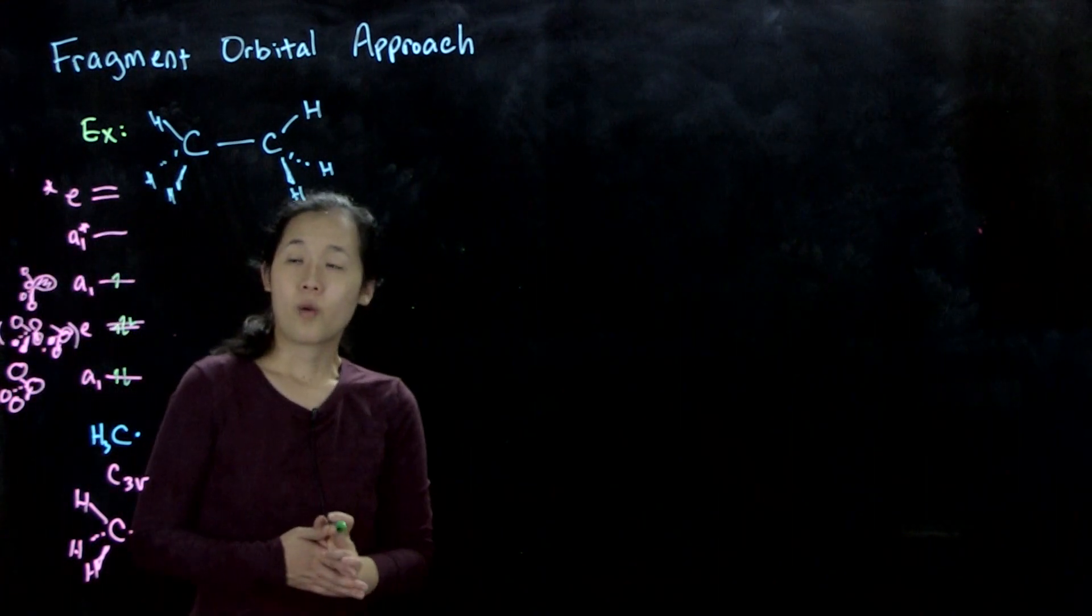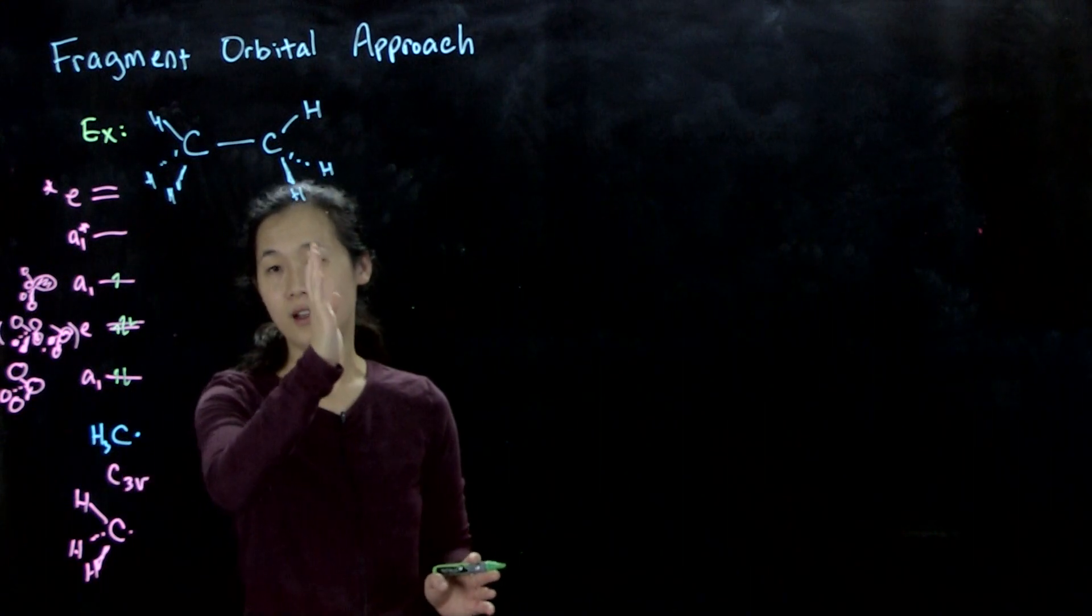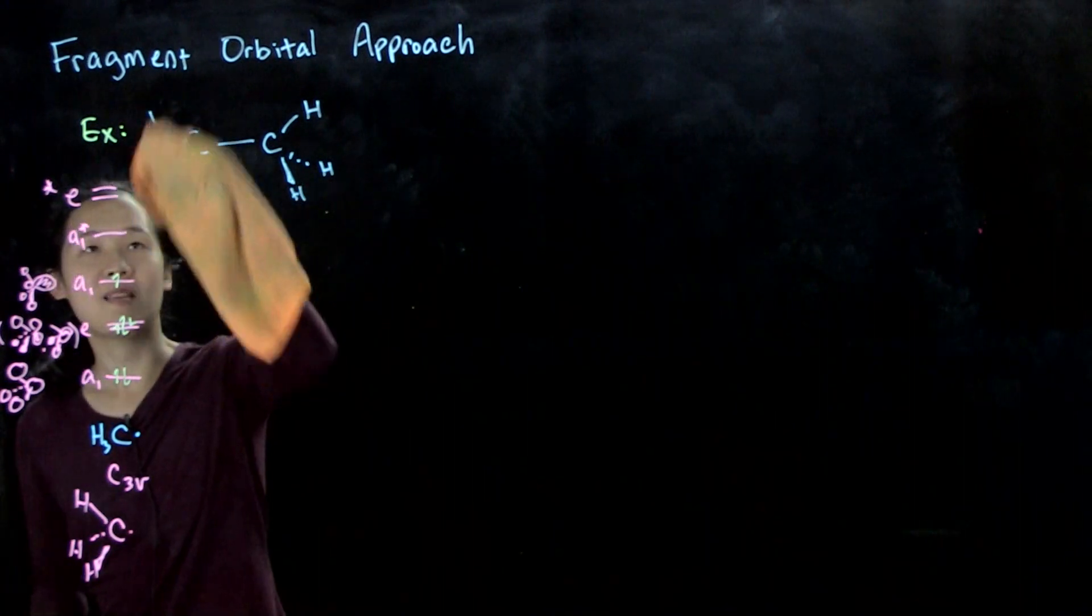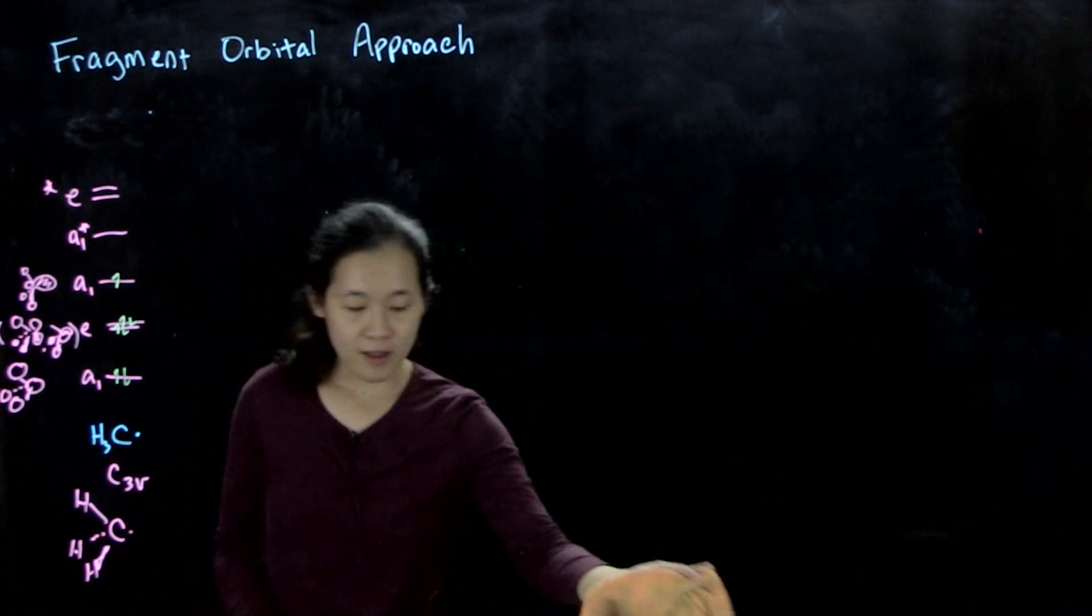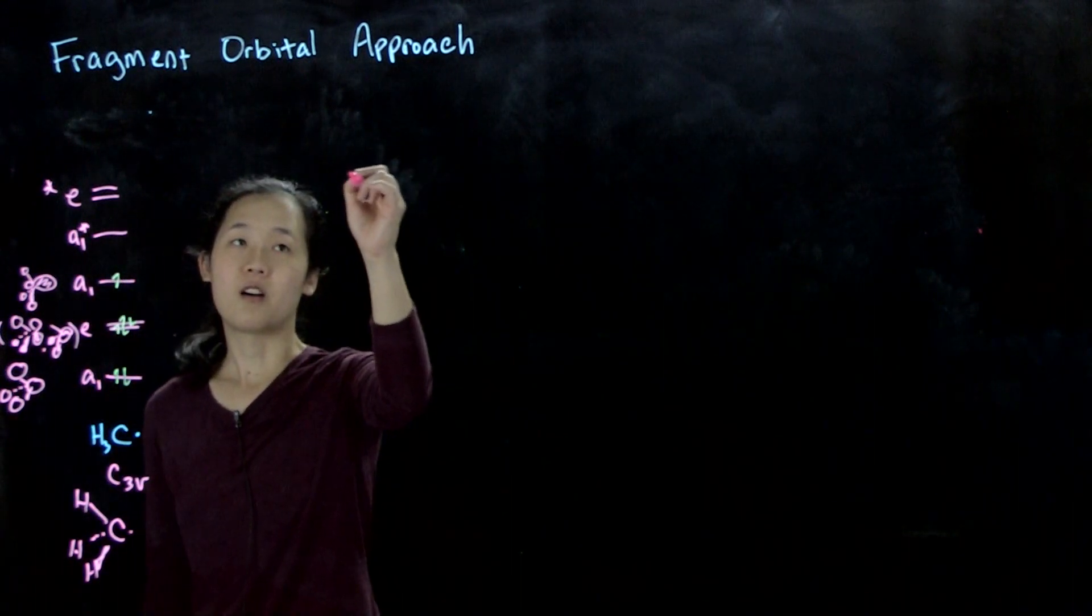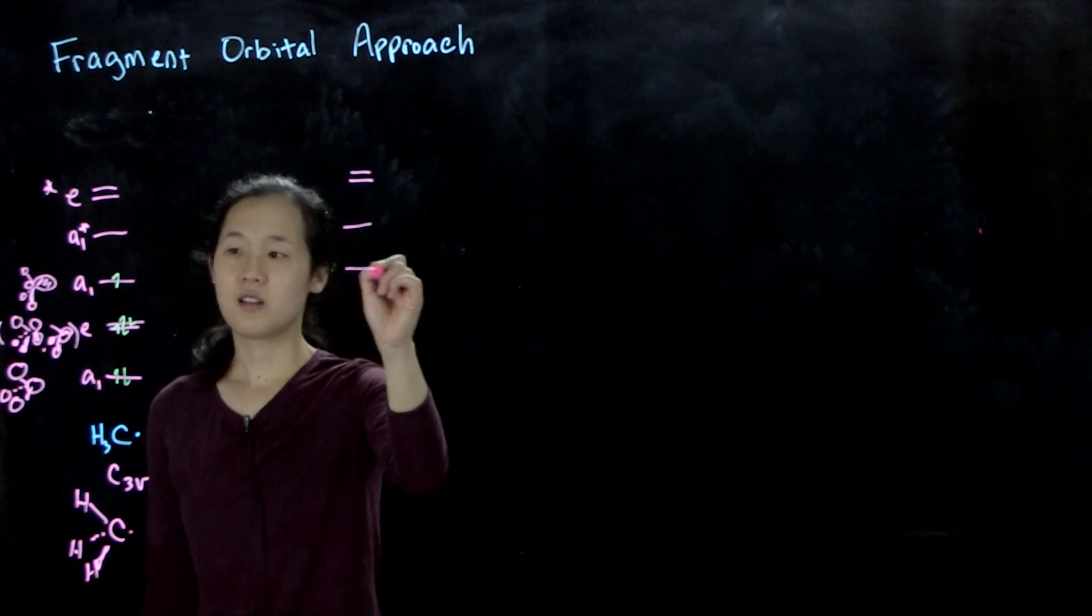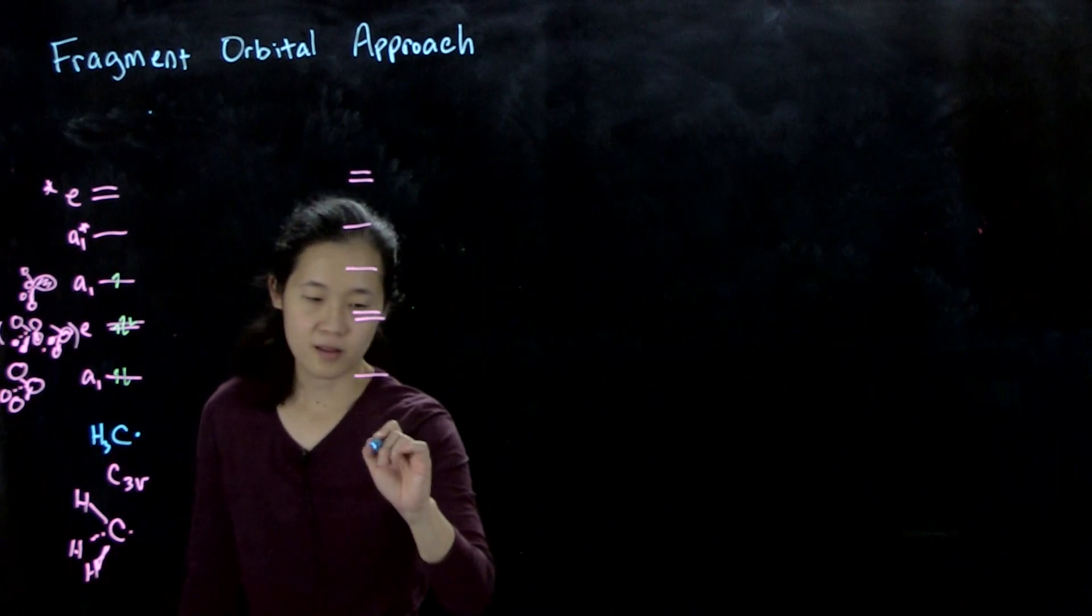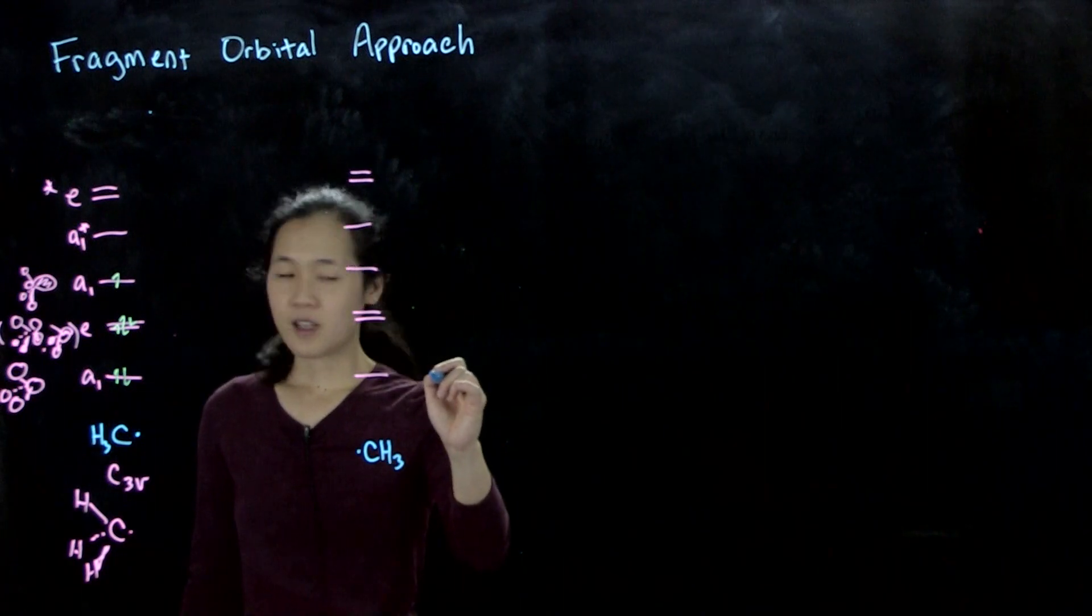Now what we want to do is we want to interact this with a second methyl fragment. This is going to get in the way, so I'm just going to quickly erase this. But remember this is the ethane molecule. Don't forget. A second methyl fragment is going to look identical to what we just drew. So we have our E star, our A1 star. This is our other methyl fragment. And again, keep in mind that this is going to look exactly the same.